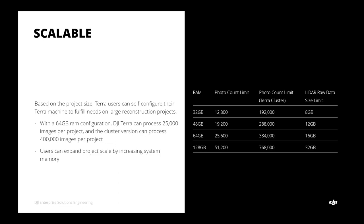Scalability is another key point. Based on project size and need, Terra machines can be upgraded to fulfill large-scale reconstruction projects. With a 64 GB RAM configuration, Terra can process about 25,000 images per project. The cluster version with multiple nodes can fulfill the need to process 400,000 images per project. Users can expand their current configuration by adding more RAM to increase the photo count limit.